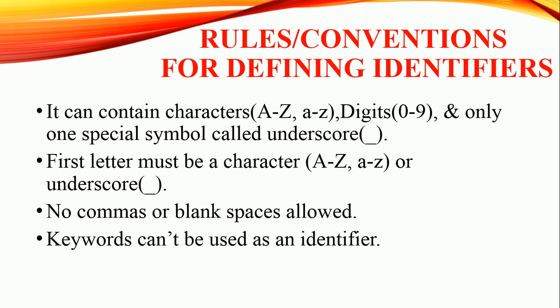Third rule: no commas or blank spaces are allowed in the name of an identifier. Last one: you can't use keywords as an identifier, as keywords are specially reserved words reserved for the compiler's use. A programmer cannot use them for their own purpose. Identifiers are names given by the programmer for their own purpose.